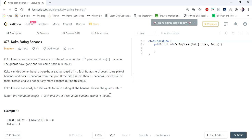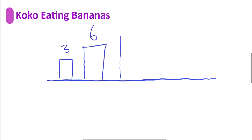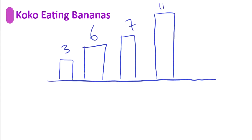Let's understand this problem with an example. Consider there are n piles: the first pile has 3 bananas, the second has 6, the third has 7, and the last has 11 bananas. It is said that the guards will return in 8 hours. The task is for Koko to eat all bananas in all the piles within 8 hours, and we have to find the speed k — the number of bananas Koko can eat in an hour.